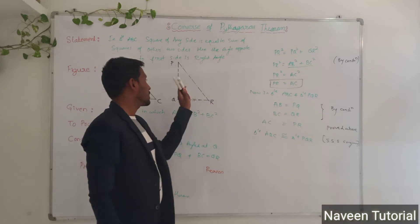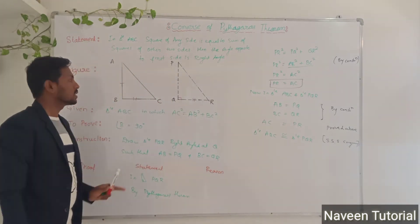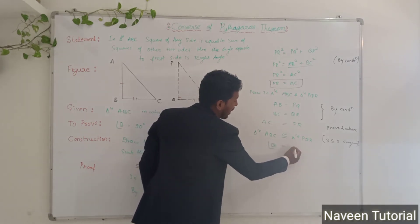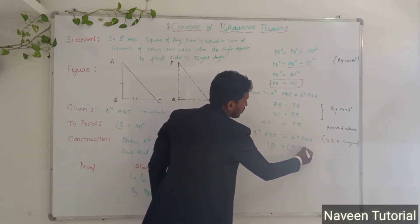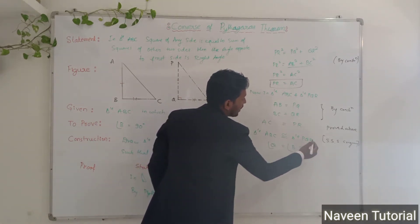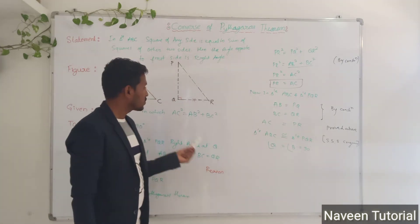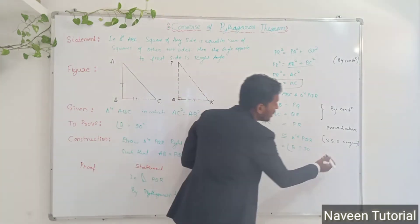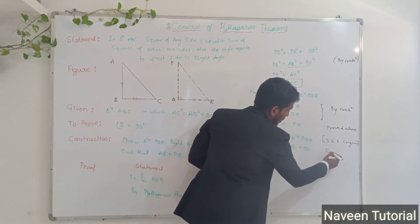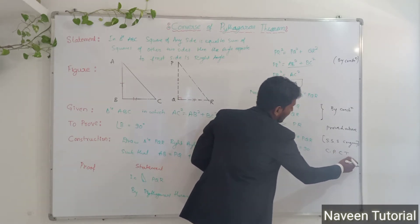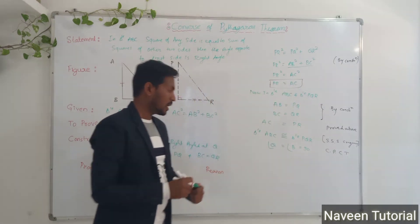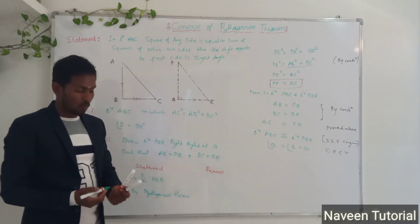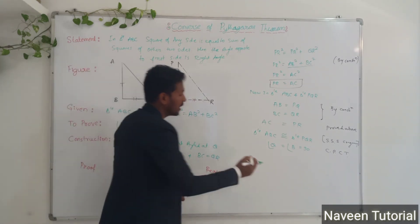By this, we have proved that this triangle is congruent to this triangle. Therefore, angle Q equals angle B equals 90 degrees, as corresponding parts of congruent triangles — written as CPCT. Hence it is proved.